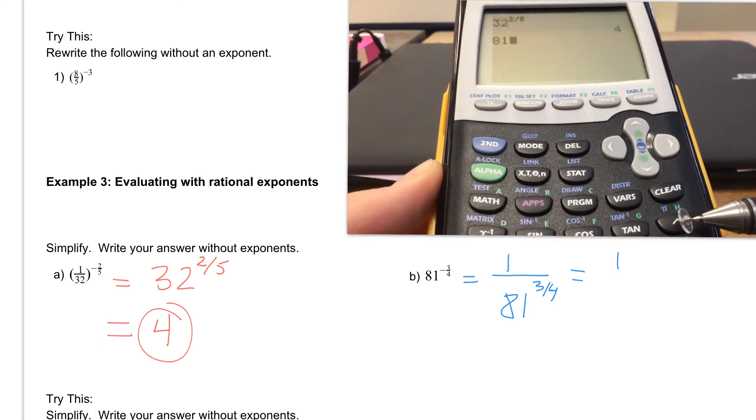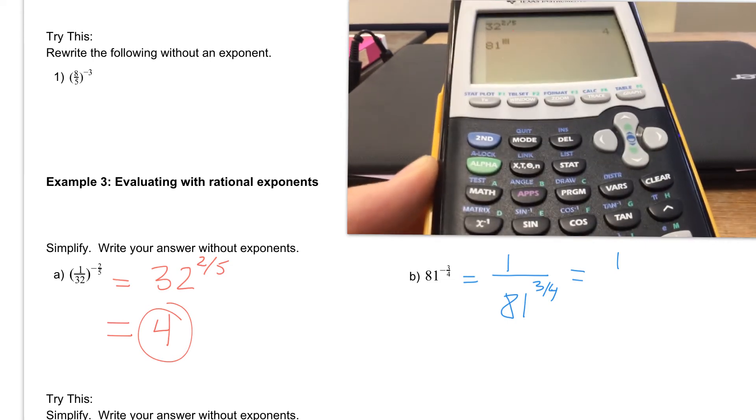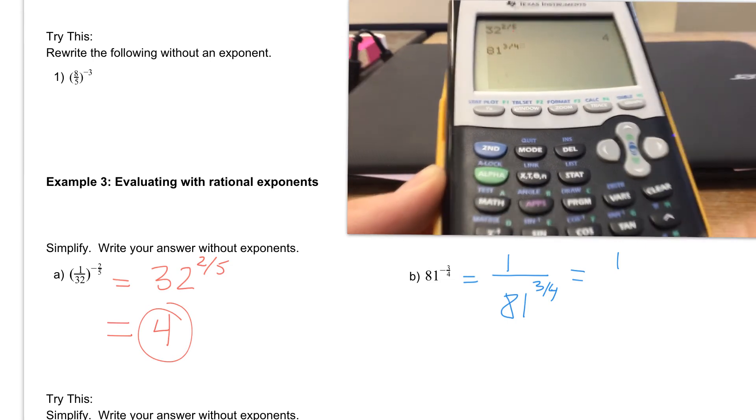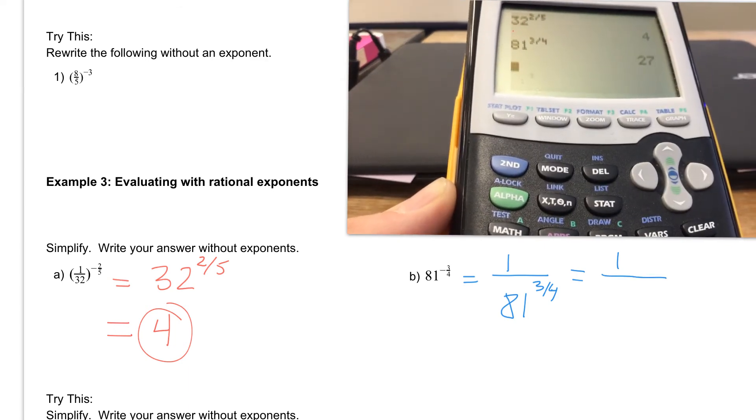We're going to raise it, so remember we're going to be hitting this button right here, our exponent key, to the 3 fourths, so 3 divided by 4. Hit enter, and you'll see that we get 27, which means that 27 is in the denominator, and we get 1 over 27.